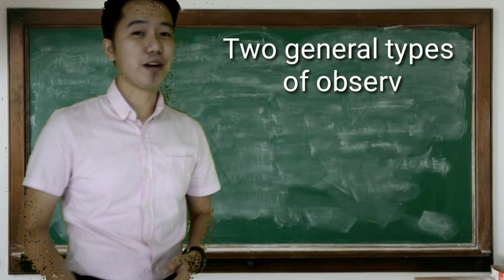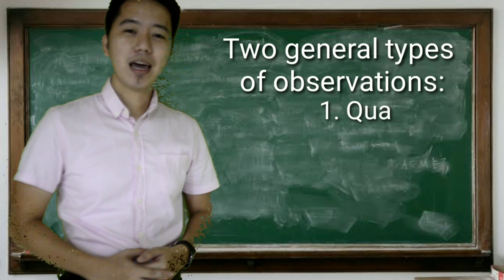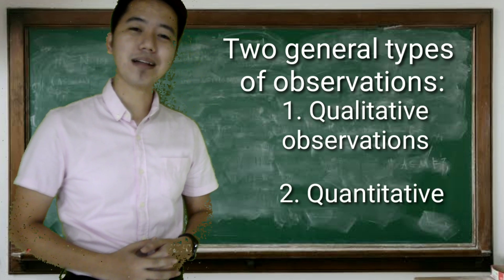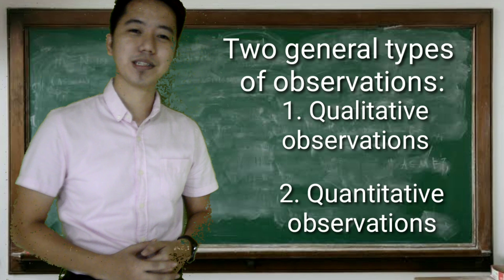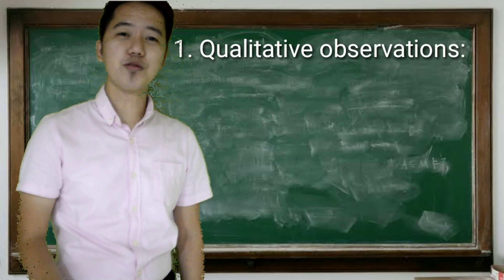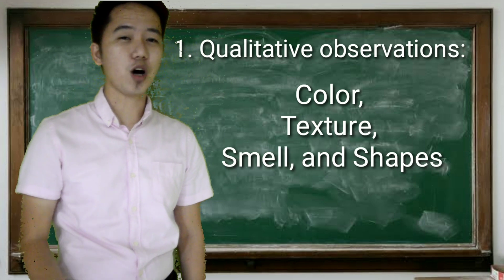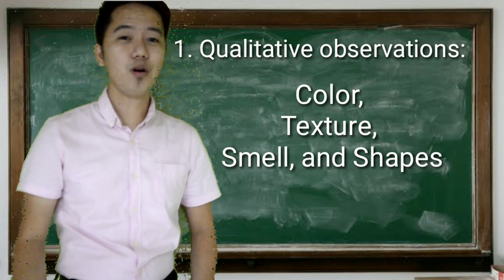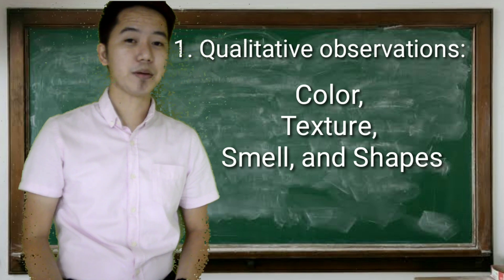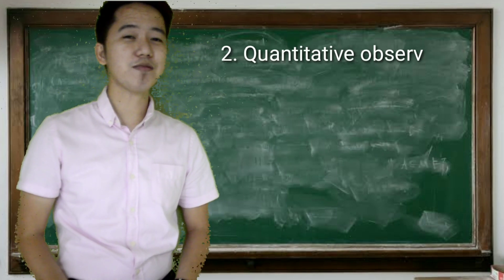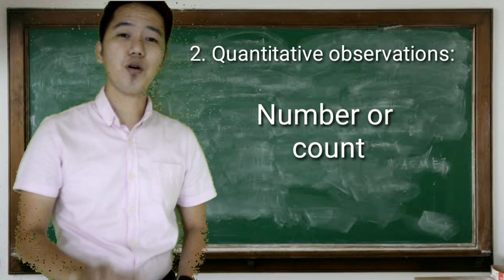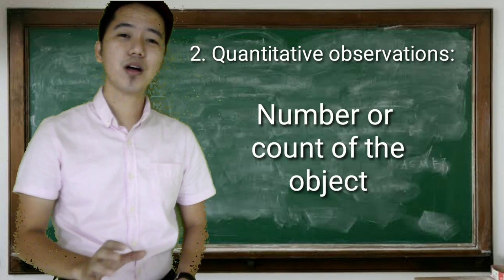It could be a qualitative observation or a quantitative observation. Qualitative observations focus on the quality of the object, like the color, the texture, and the shapes, while quantitative observations focus on the number or count of the object.